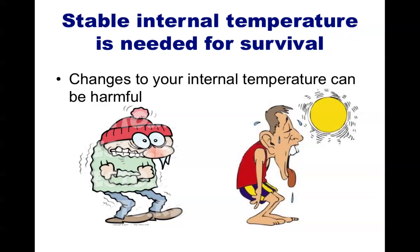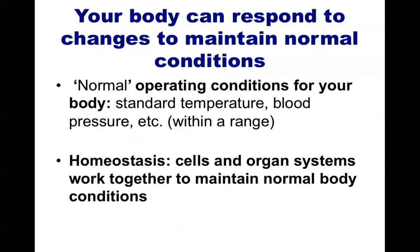Everyone has been outside when it was too cold or too hot. When you are cold, you shiver uncontrollably. When you are overheating, you'll sweat. These responses are your body's way of trying to counteract the drop in temperature and keep your internal cells at a nice 37 degrees Celsius. Our bodies have the ability to respond to changes in internal or external conditions to maintain normal levels of temperature, blood pressure, and other features necessary for life. This ability to respond and remain balanced is known as homeostasis.